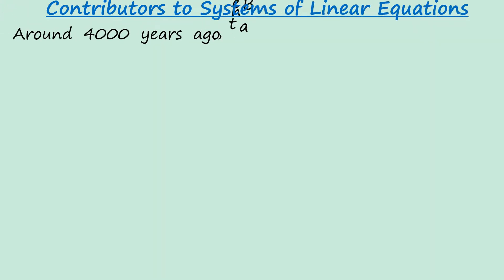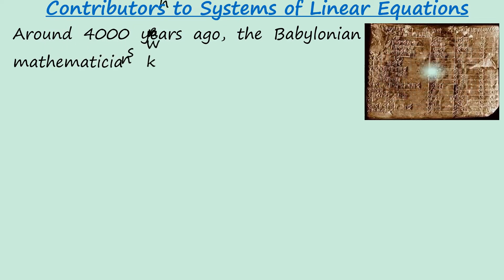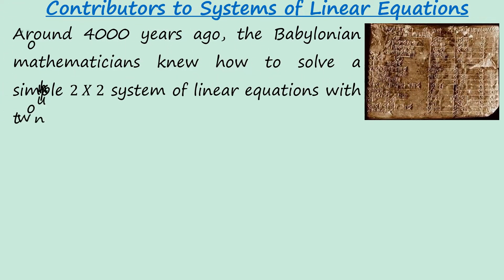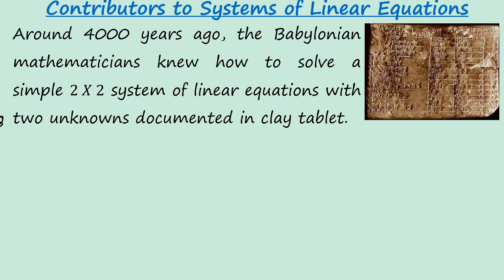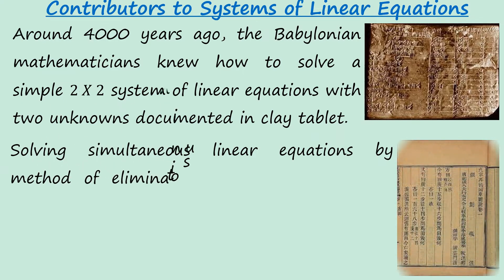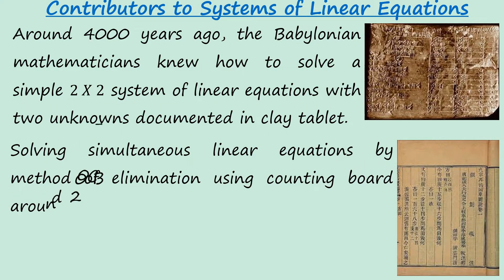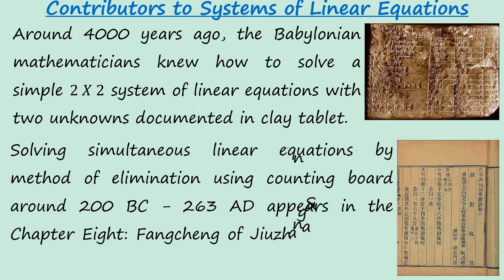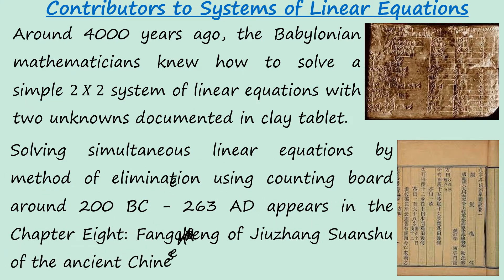Let's talk about the contributors to systems of linear equations. Around 4,000 years ago, the Babylonian mathematicians knew how to solve a simple two-by-two system of linear equations with two unknowns, documented in a clay tablet. Solving simultaneous linear equations by the method of elimination using a counting board around 200 BC appears in Chapter 8 of the ancient Chinese mathematical text Jiuzhang Suanshu.